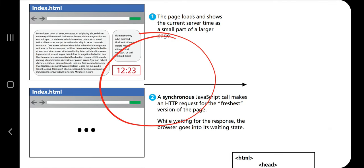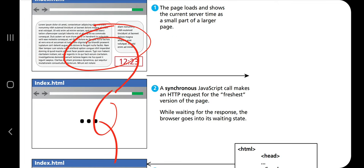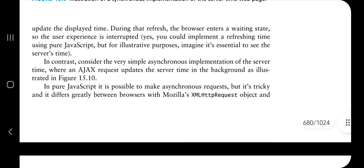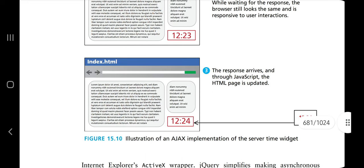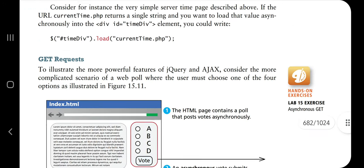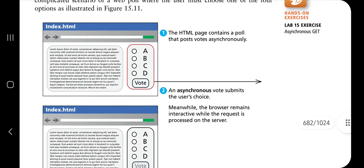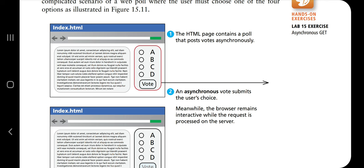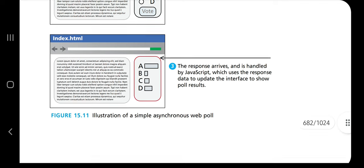With synchronous JavaScript, operations happen one after the other and must wait. With asynchronous JavaScript, operations happen in parallel — for example, a time display can update asynchronously without blocking other operations, and the time gets updated on screen. To make asynchronous requests, you use the .load() function on an element such as timediv.load(). To get responses, for example in a voting scenario, clicking a vote asynchronously changes that part of the code without affecting the rest of the page.